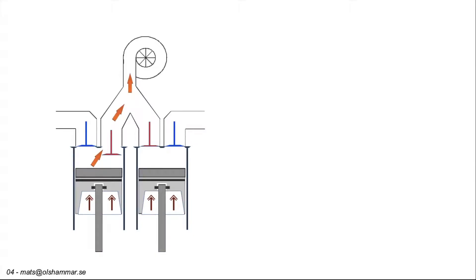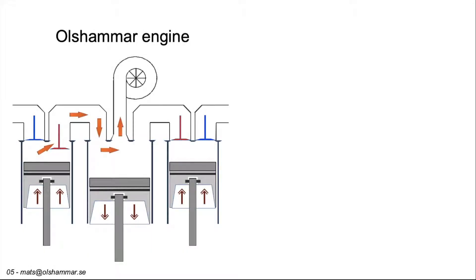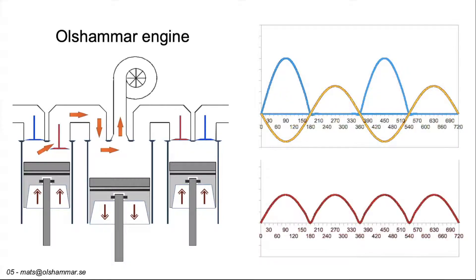Two-cylinder four-stroke engines are not optimal for a turbo as the exhaust flow is uneven. The main idea with the Olsammar engine is to extract extra energy from the exhaust and give smoother flow to the turbo. The two exhaust peaks from the combustion cylinders are divided into four smaller exhaust peaks that will drive the turbo. A smoother flow is less stressful to the turbo and will allow a larger volume of exhaust to pass, or allow us to fit a smaller turbo for the same flow. With the smaller turbo the engine will work better at lower RPMs, and this smaller turbo will still be able to handle the same maximum exhaust flow.